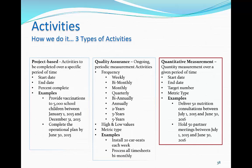Quantitative measurement or QM activities were the last type implemented. These activities are very similar to project-based activities with the addition of a target number field. They have a start date, end date, a target number, and a metric type. An example of a QM activity could be to deliver 50 nutrition consultations between July 1, 2015 and June 30, 2016. The target number would be 50 and the metric type would be nutrition consultations. With the target number defined, the percent complete for QM activities can be automatically calculated.